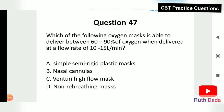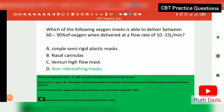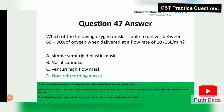Question 47: Which oxygen mask is able to deliver between 60 to 90 percent of oxygen when delivered at a flow rate of 10 to 15 liters per minute? The non-rebreathing mask. A simple semi-rigid plastic mask delivers 21 to 60 percent; nasal cannula approximately 20 to 35 percent; and a Venturi mask delivers 24 to 60 percent according to the Venturi barrel reading.